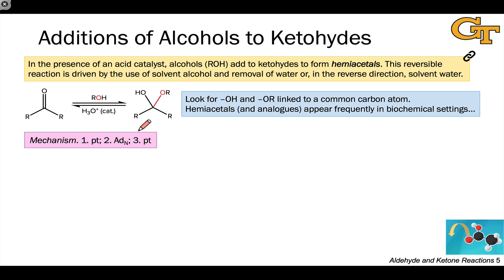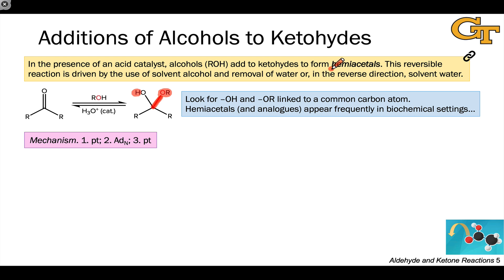We just saw that water adds to carbonyl groups to give hydrates. When we replace one of the hydrogens of water with an R group to give an alcohol, a similar nucleophilic addition process takes place. We end up with an alkoxy group linked to the carbonyl carbon rather than a hydroxy group, and a hydrogen adds to the carbonyl oxygen as well. This gives rise to an intermediate called a hemiacetal.